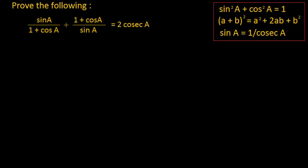The formulas which we are going to use are very familiar. First one is sine square a plus cos square a is equal to 1. Second one is a plus b whole square is equal to a square plus 2ab plus b square. And the third one is sine a is equal to 1 by cosec a.